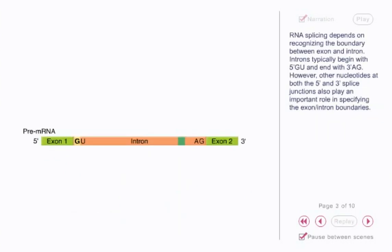RNA splicing depends on recognizing the boundary between exon and intron. Introns typically begin with 5' GU and end with 3' AG. However, other nucleotides at both the 5' and 3' splice junctions also play an important role in specifying the exon-intron boundaries.